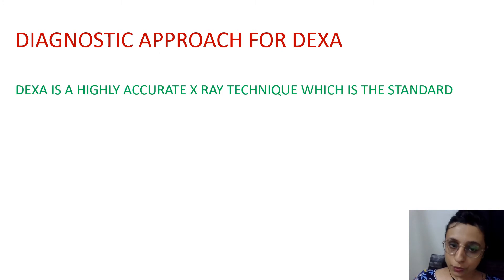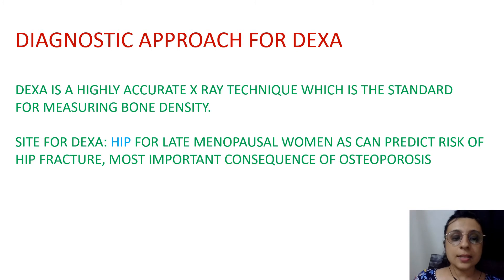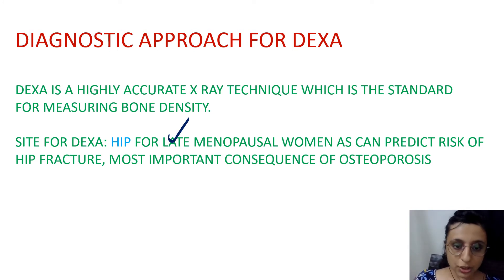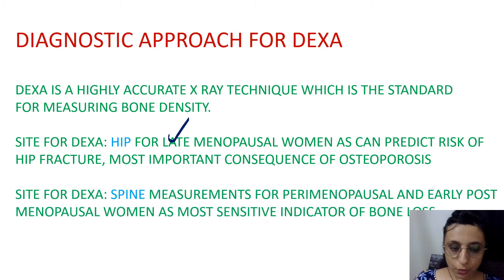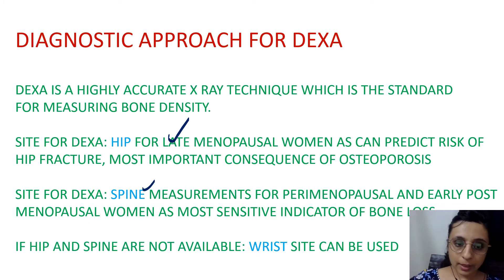The diagnostic approach uses DEXA — a highly accurate X-ray technique and the standard for measuring bone mineral density. The site of DEXA is important to remember: in late menopausal women it is the hip, which predicts the risk of hip fracture — one of the most important consequences of osteoporosis. In perimenopausal and early postmenopausal women the site is the spine. If both hip and spine are unavailable, the wrist can be used.